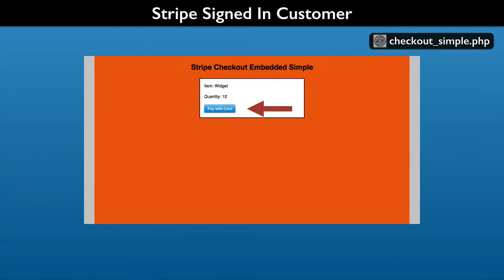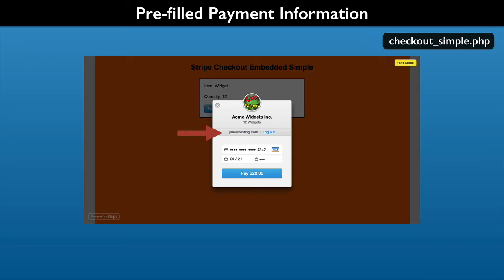Now we can simulate a customer who is signed into Stripe. Reload the web page and click the Pay with Card button. Stripe has recognized an email address as being signed into Stripe, and this is associated with your website. The payment information is pre-filled for them. Press the Pay $20 button and the checkout step is completed.